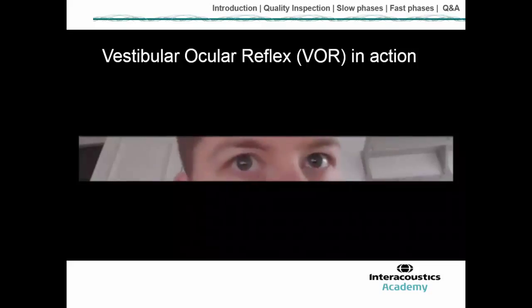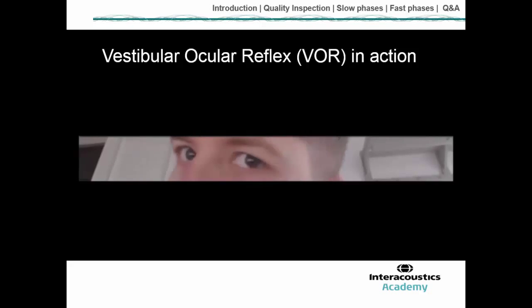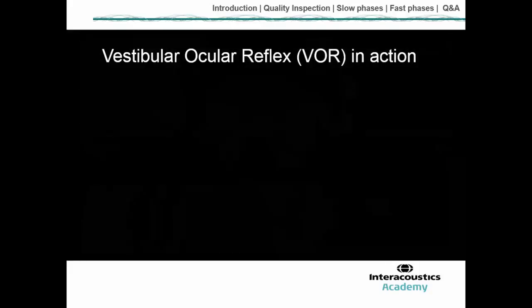In this video, you can see eyes focusing on a target straight ahead while the head moves left and right. The eyes stay maintained on the target despite head movement because the vestibular system tells the eyes to move in an equal and opposite direction to the head. This is the true function of the VOR, and what we want to measure with the video head impulse test is how well this VOR is working.